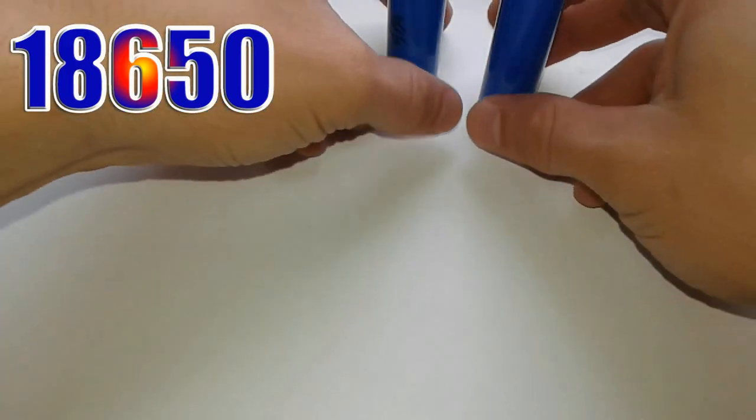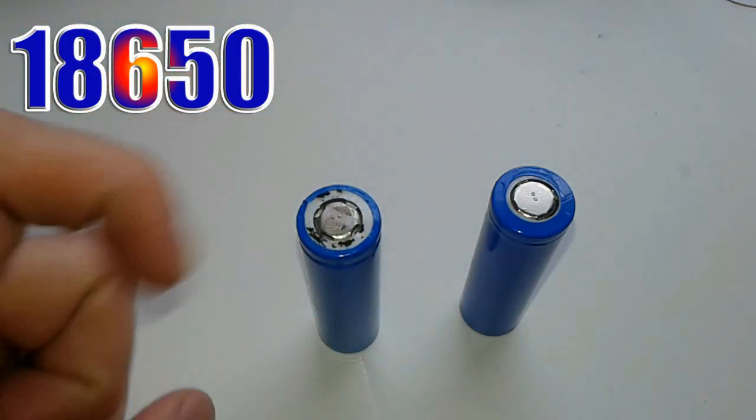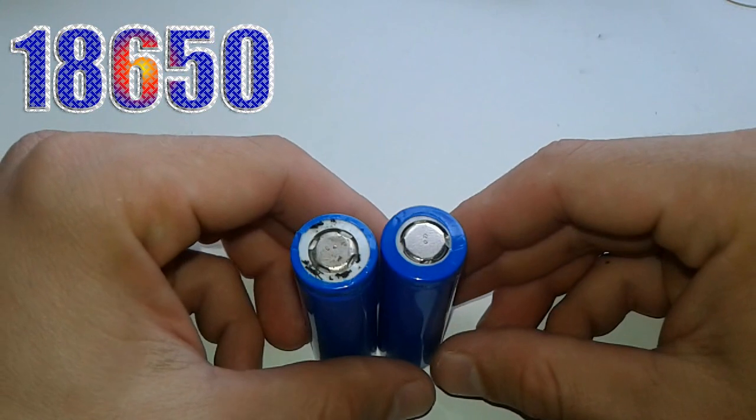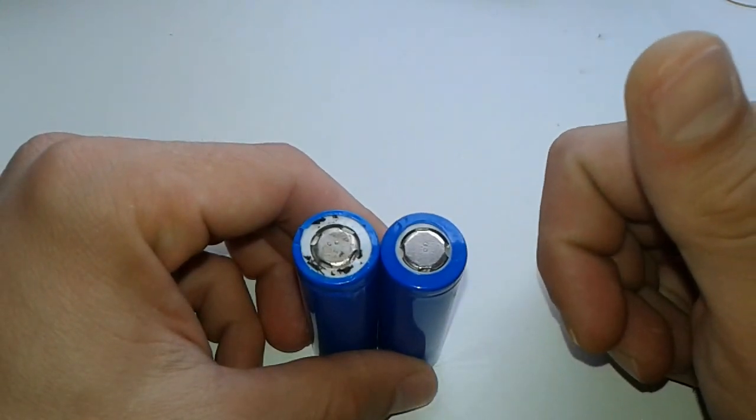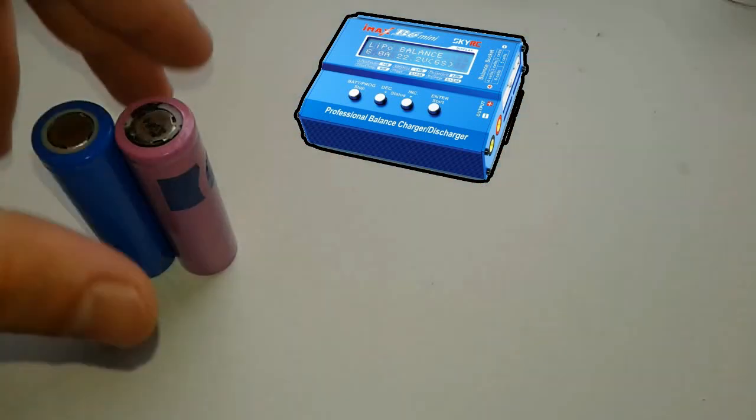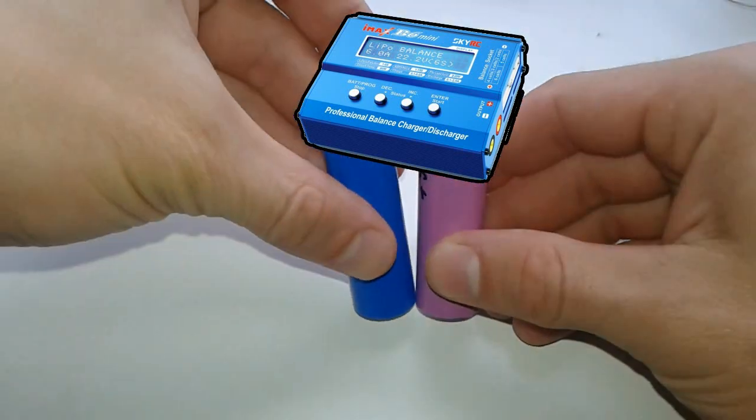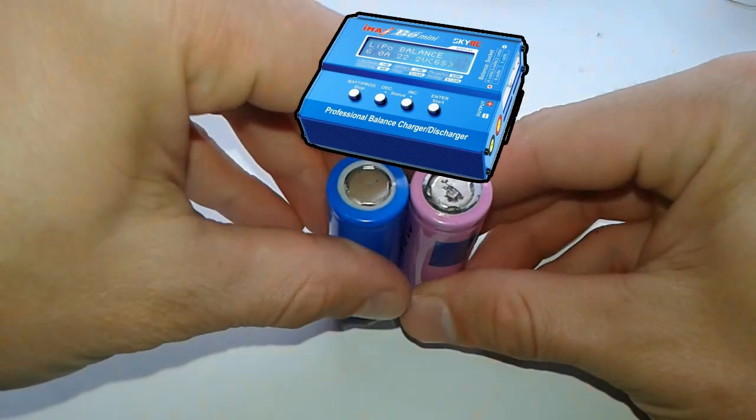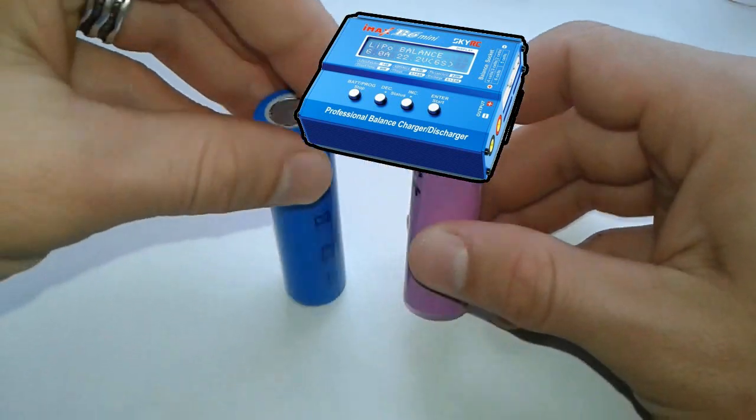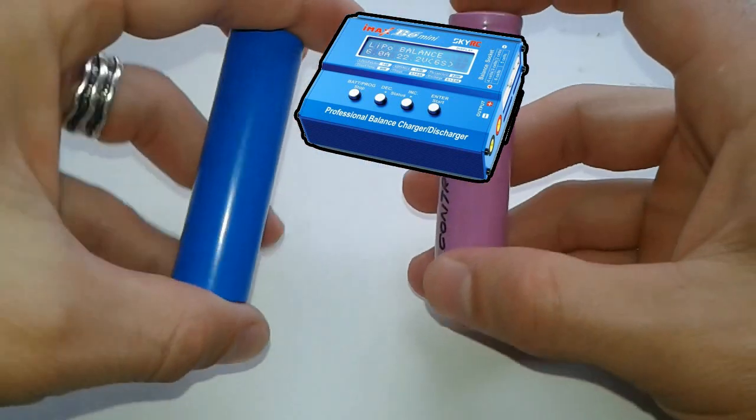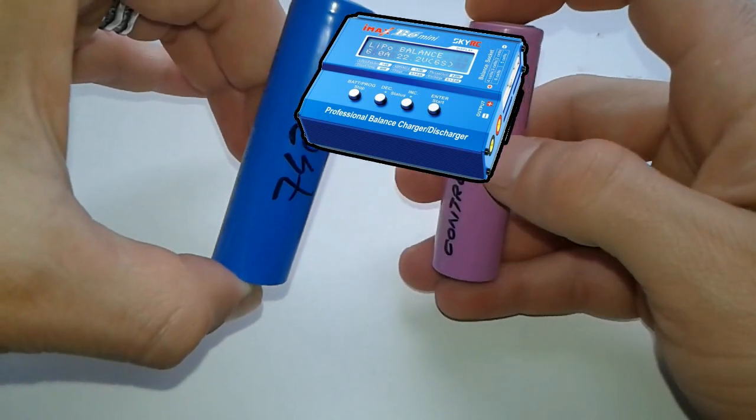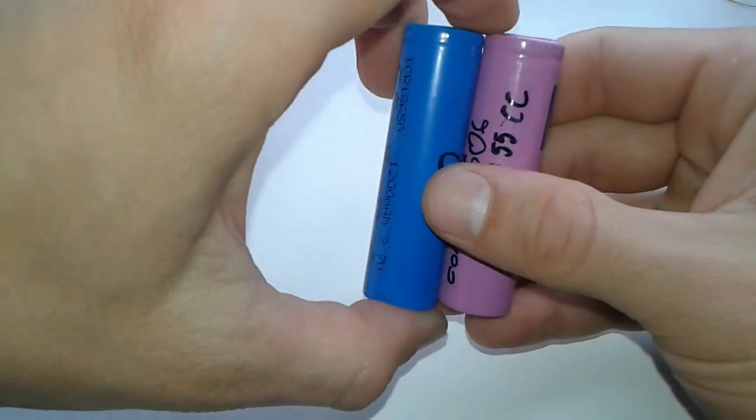First step is to charge the batteries and discharge them using an IMAX B6 charger. I got a video here you can click, and we're going to check the capacity. Next step, after you check the capacity, you have to group them according to similar or nearly the same capacity, like this one. Although they are two different manufacturers, one is 740 milliamps and the other is 455—so close, not ideal, but close.